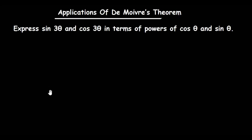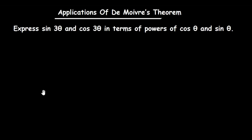In this lesson, we are going to solve this question using De Moivre's theorem. The question says that we should express sine 3 theta and cosine 3 theta in terms of powers of cos theta and sine theta.